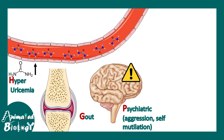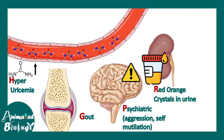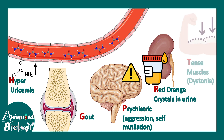Uric acid can also go to the brain, deposit as crystals, and cause uric acid toxicity leading to psychiatric manifestations like aggression and self-mutilation. Uric acid can also get excreted by the kidneys as uric crystals, and we can see red-orange crystals coming out with urine. Most commonly, a mother will complain that she can see red-orange sand in the diaper of her baby. Additionally, uric acid causes muscle dystonia, or tense muscles, by some unknown mechanism.